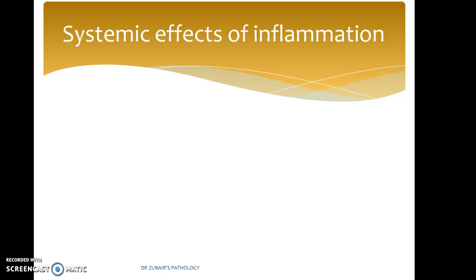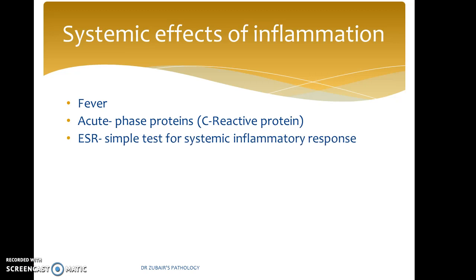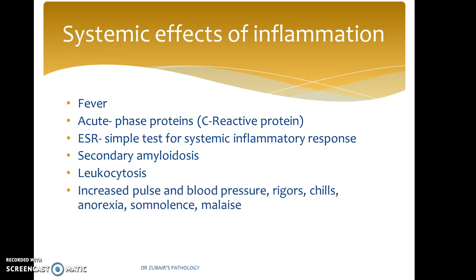How does inflammation present clinically? A patient can have fever. There will be an elevation in acute phase proteins such as C-reactive protein, elevation of ESR — erythrocyte sedimentation rate — which is a simple test for systemic inflammatory response. ESR has great prognostic value. It can lead to secondary amyloidosis, and an elevation in the white blood cell count known as leukocytosis. There can also be increased pulse and blood pressure.